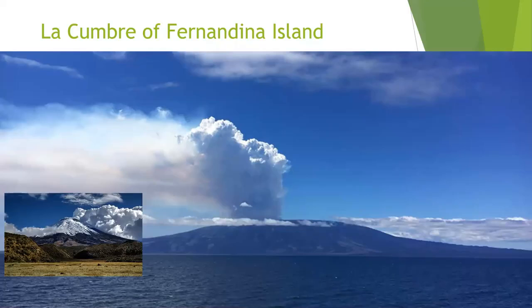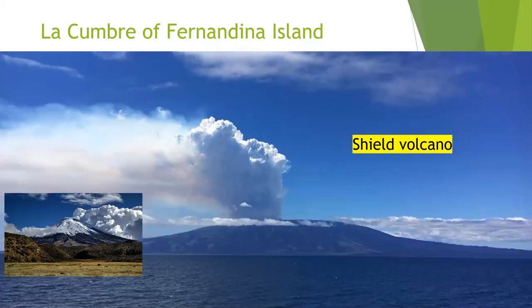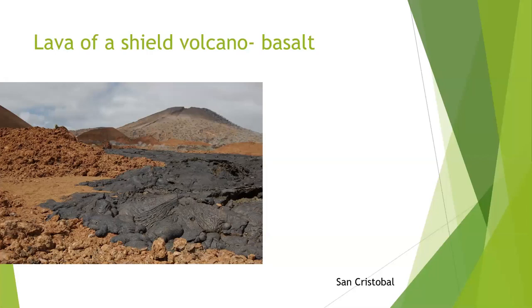You'll notice that it's a very different shape than Cotopaxi. Cotopaxi, being a subduction zone volcano, is smaller and more cone-shaped, whereas La Cumbre is known as a shield volcano. Like the volcanoes of Hawaii, it's very, very broad, and it is not as explosive as subduction zone volcanoes. When the lava flows out of a shield volcano, it simply flows and rarely explodes into the air.